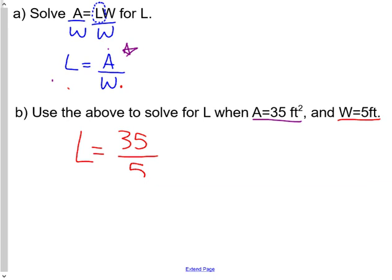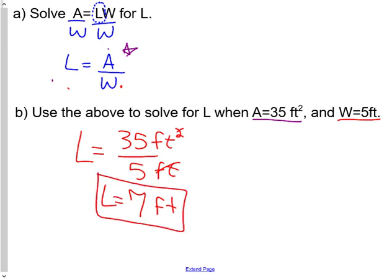And we technically have labels here. But in general, L for length equals feet. So 35 divided by 5 equals 7. And then one of these feet is canceled. We get L equals 7 feet. So we have feet times feet in the top and only one feet in the denominator. One of each cancels.